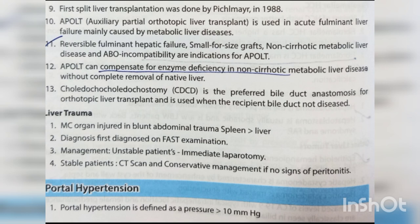Choledochostomy is the preferred bile duct anastomosis for orthotopic liver transplant and is used when the recipient bile duct is not diseased. Liver trauma: the most common organ injured in blunt abdominal trauma is the spleen, followed by the liver. Diagnosis is first made on FAST examination. Management: unstable patients require immediate laparotomy; stable patients undergo CT scan and conservative management if no signs of peritonitis.